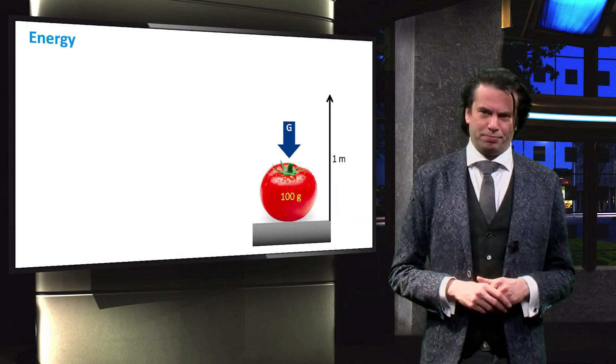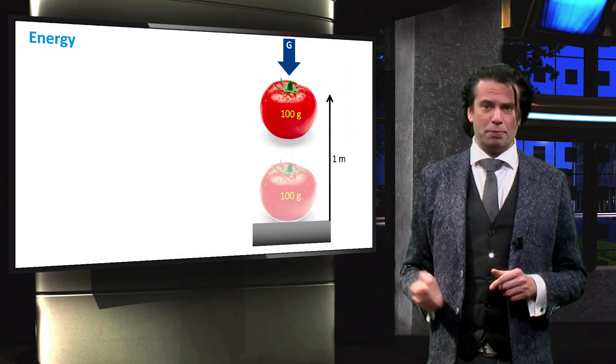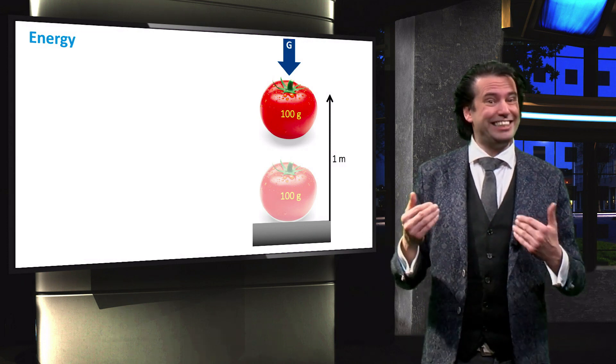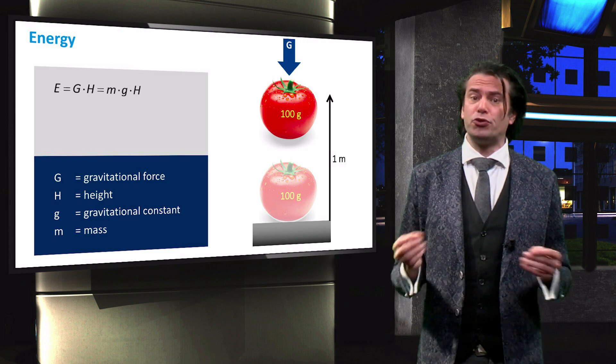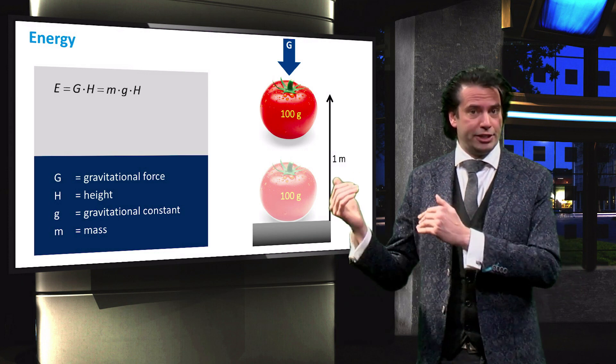Here we have a tomato. We lift the tomato up to a height of 1 meter, for which we have to overcome the gravitational force G. Since the required amount of energy is equal to the force times the distance, it is equal to G times the height H.